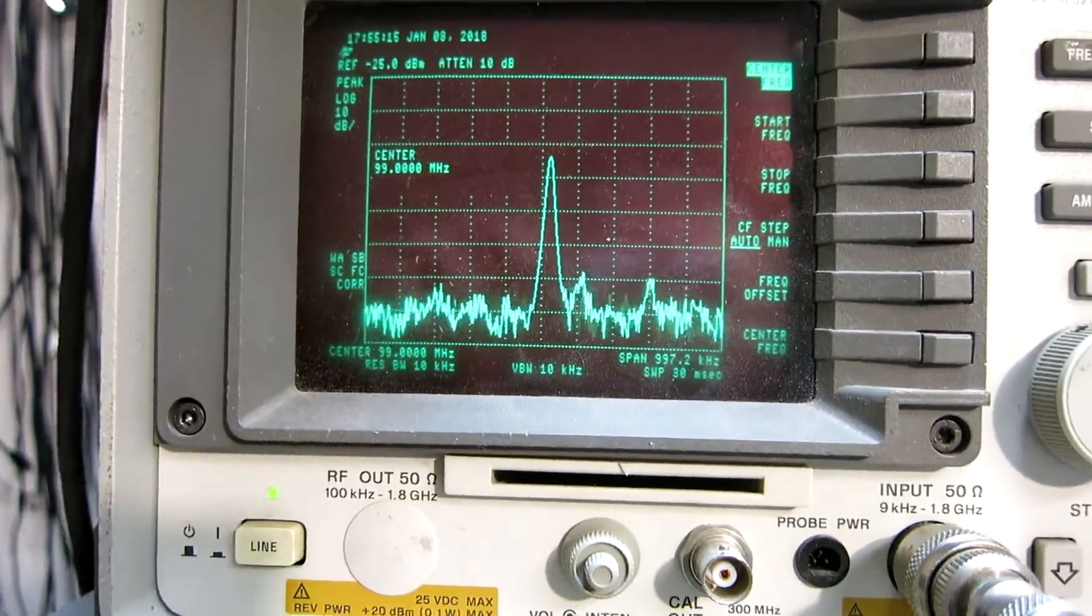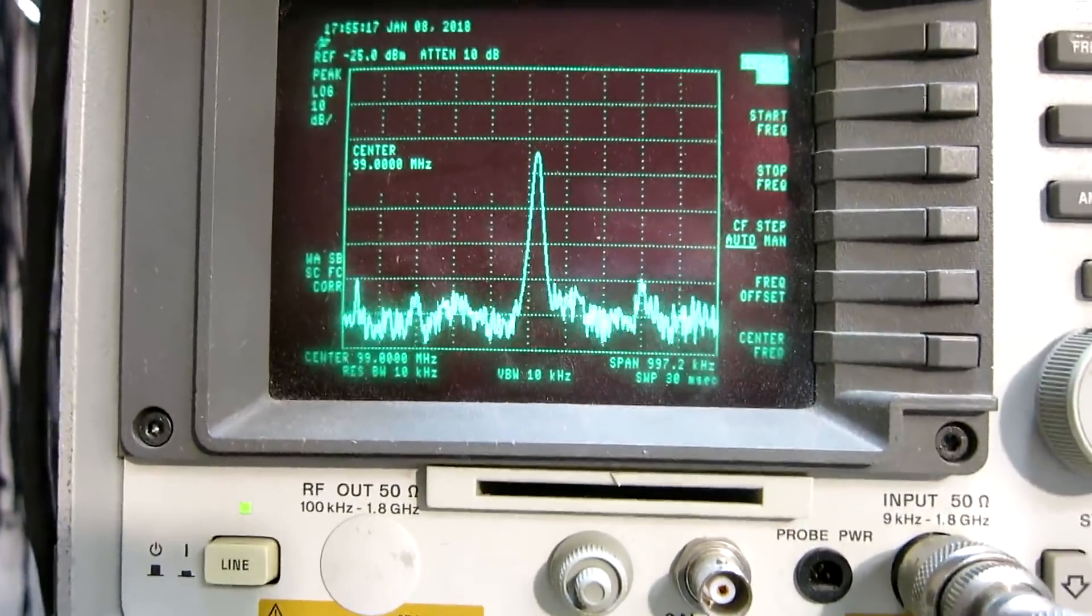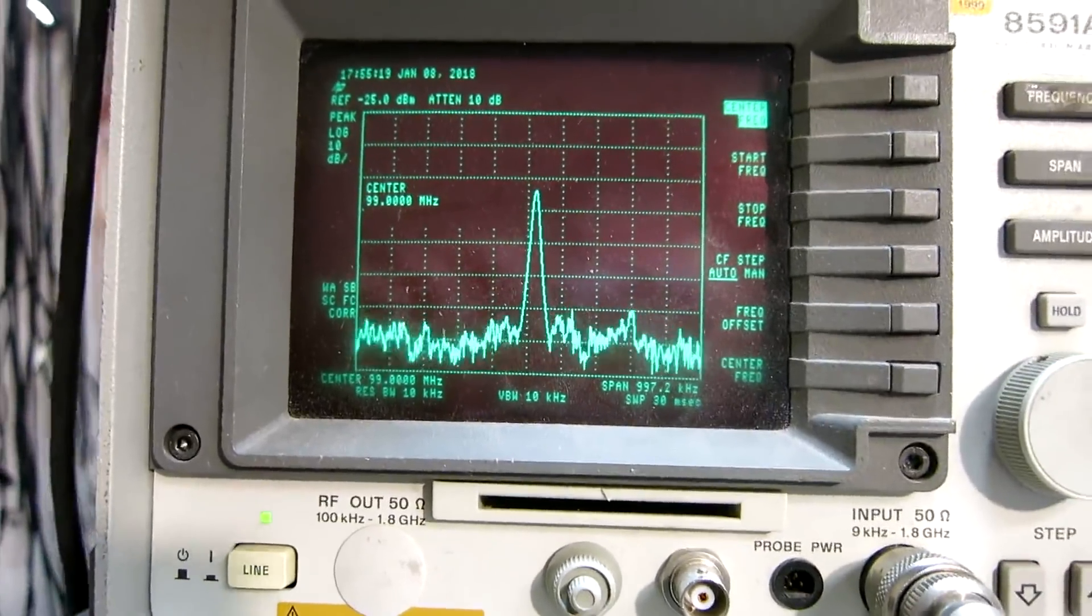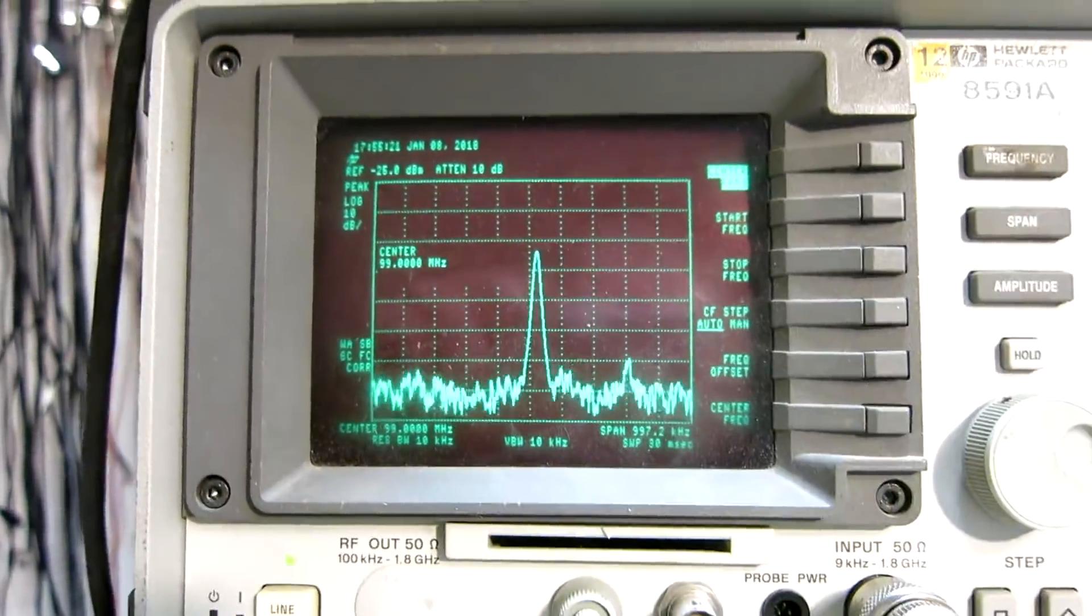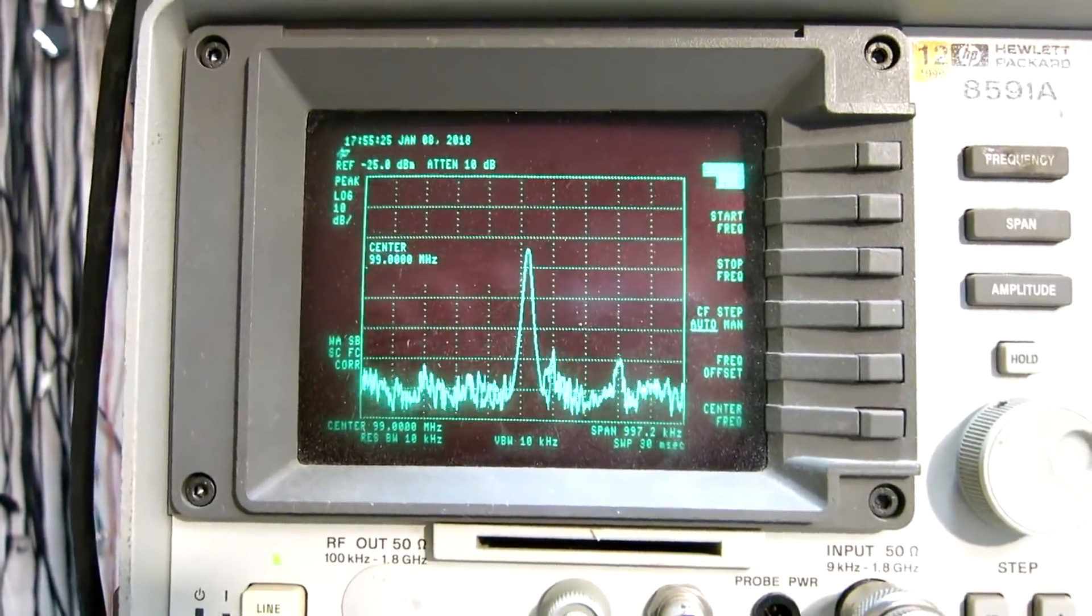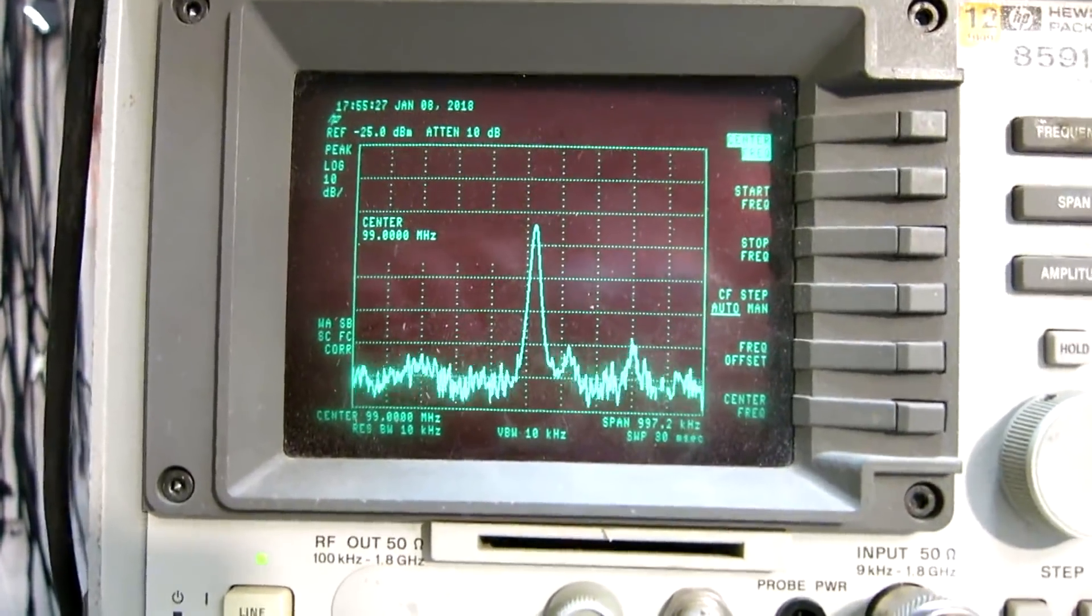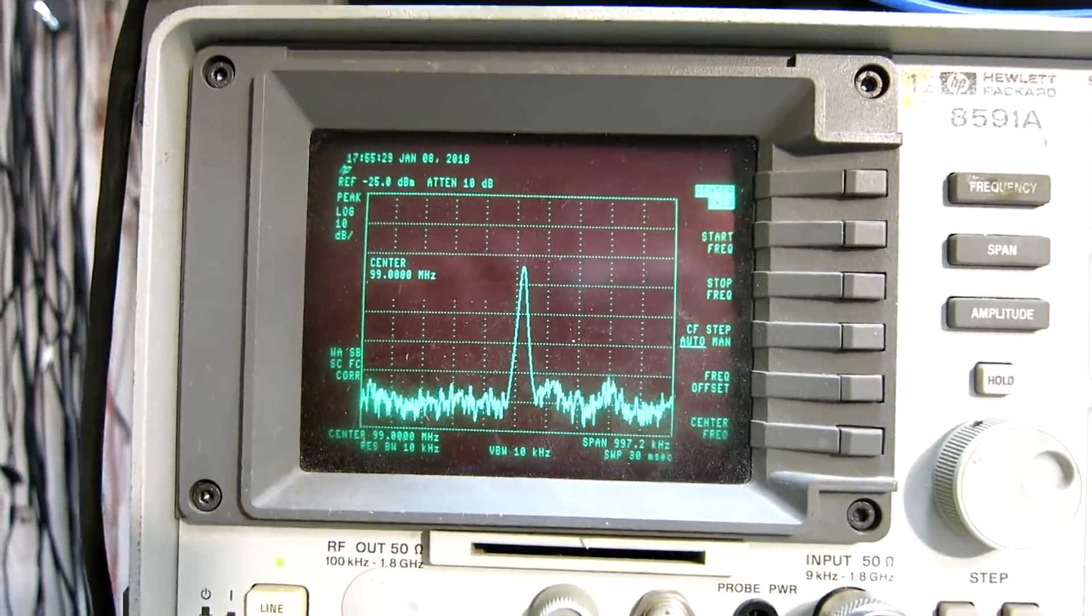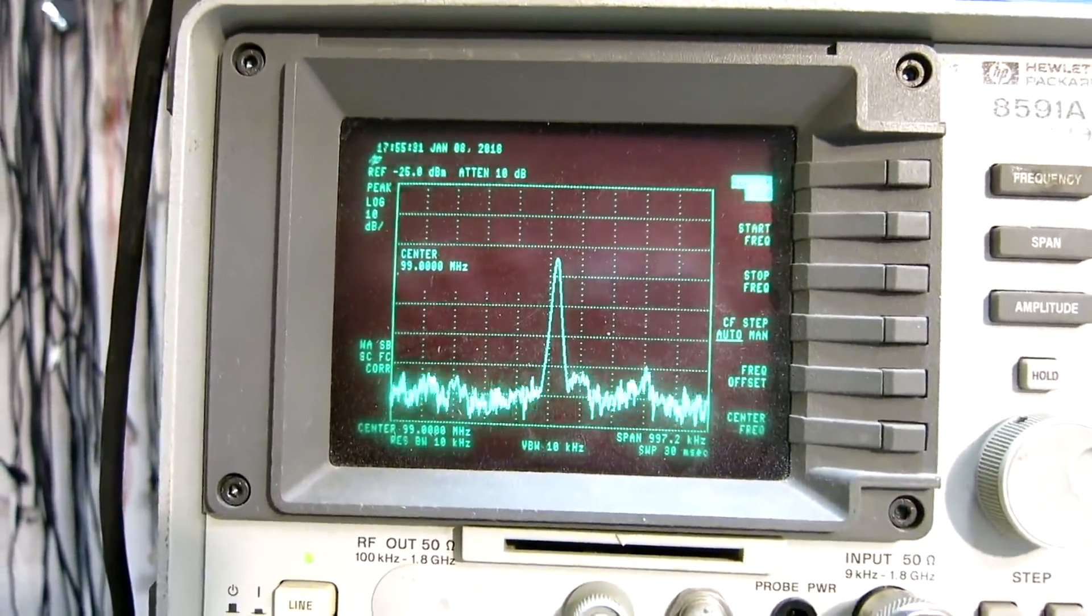Because there is a wide band detector somewhere that detects that there is too much signal. So this radio has a wide open front-end, or rather wide open at least.